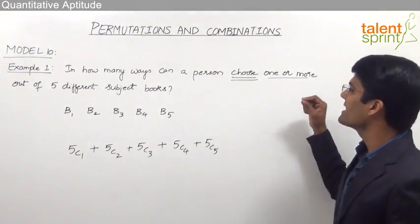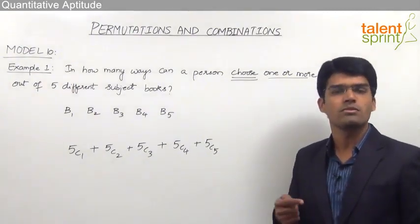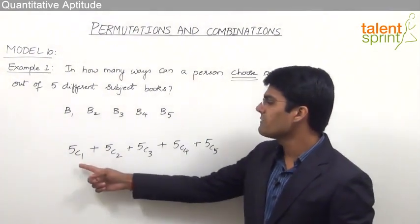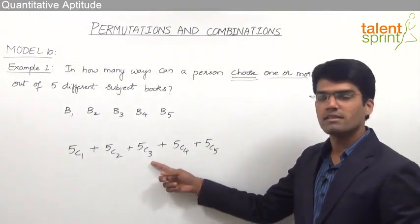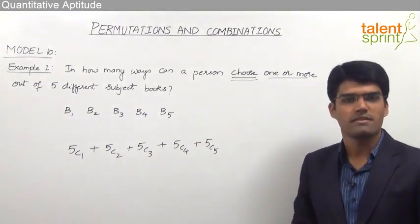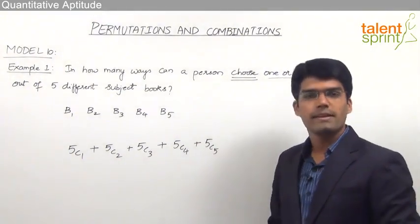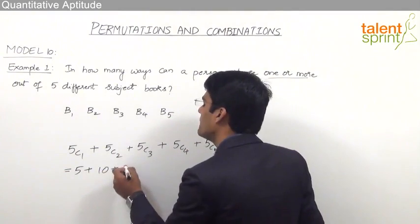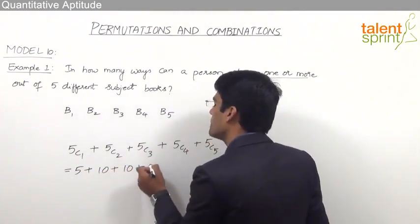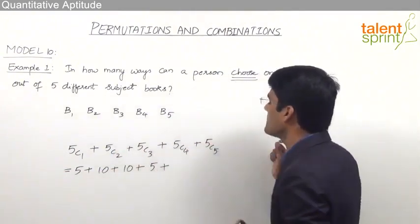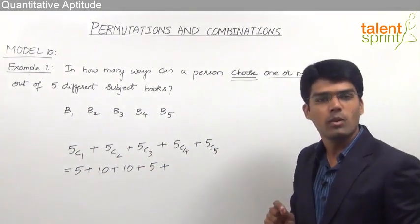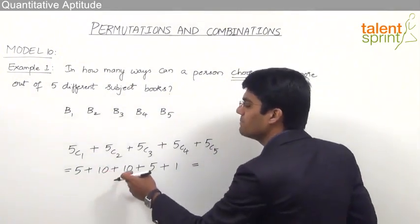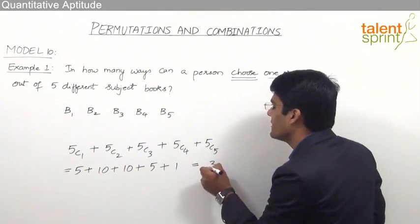One or more means it can be one, two, three, four, or five, since there are maximum five books. Now evaluating: 5C1 = 5, 5C2 = 10, 5C3 = 10, 5C4 = 5 (same as 5C1), and 5C5 = 1 because NCR = 1 when R = N. So totally we get 5 + 10 + 10 + 5 + 1 = 31 ways.